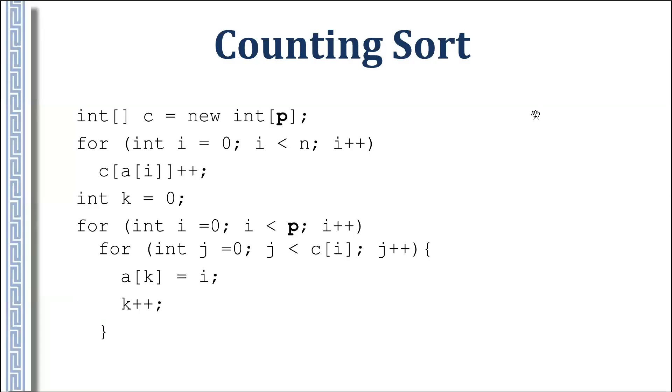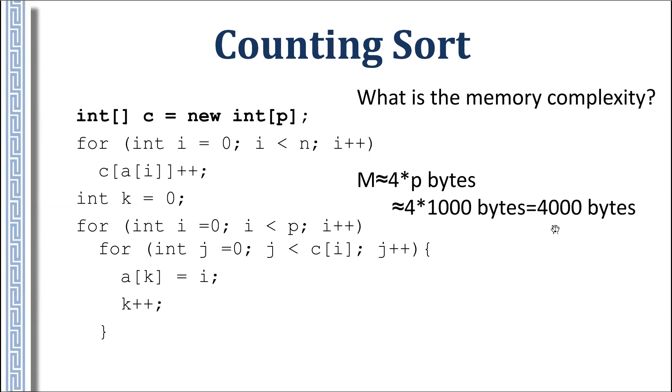Let us estimate the size of memory. We can estimate it by analyzing the size of variables here. The most big variable is array c - that is counter for each possible value. For size p, because it is int, it is four times p bytes, about 4000 bytes. But typically we don't use exactly this number because we should also count the size of these variables k, i, j and so on. That's why we just use asymptotic size of memory, which is O(p) bytes.